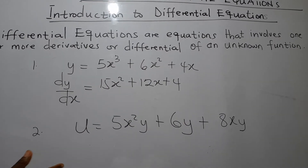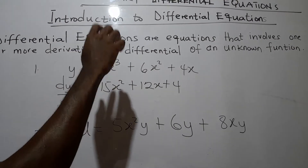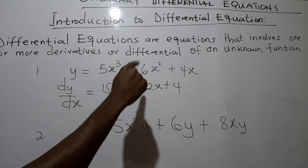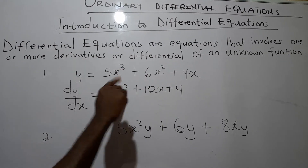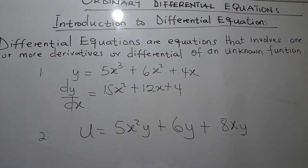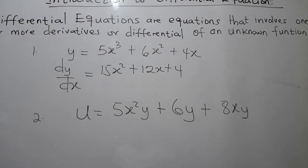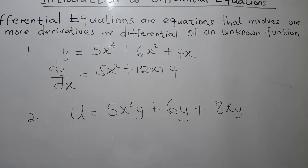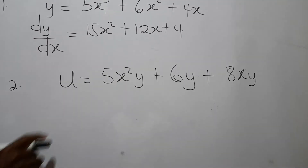Since there is one and only one independent variable, and the differentiation is done with respect to that independent variable, then we say that this is an ordinary differential. The differentiation is done with respect to just one single independent variable, so we call it an ordinary differential. Now let's look at a contrasting case.